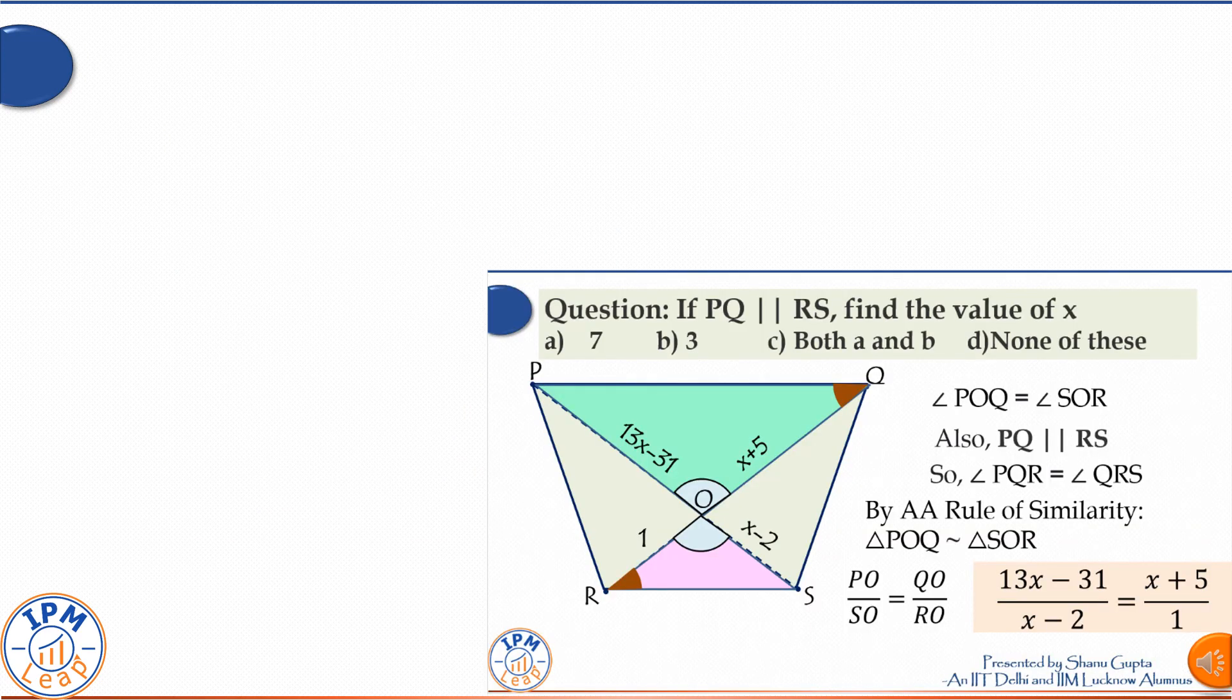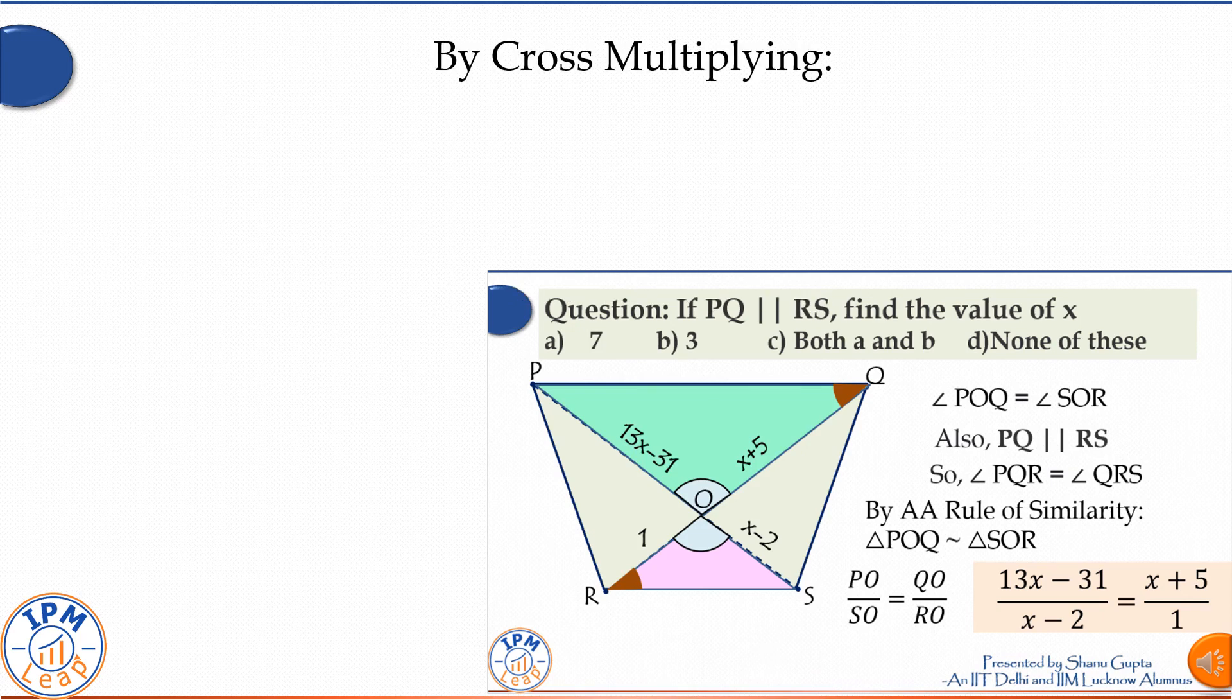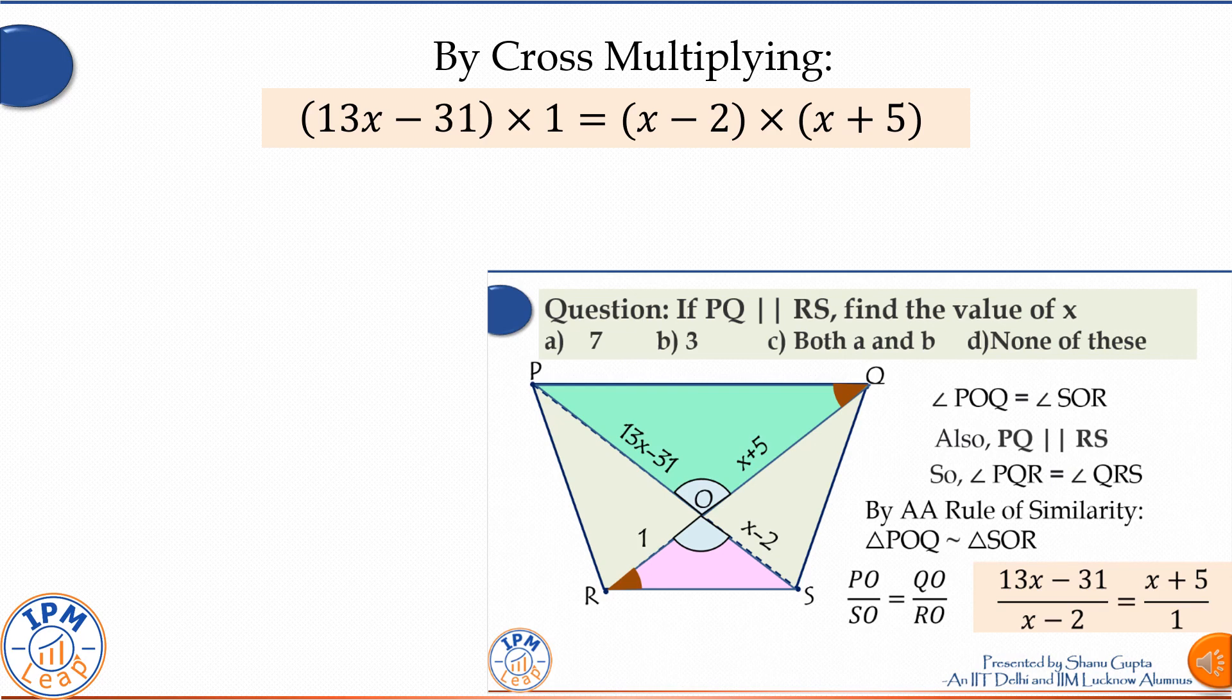Next we can simply cross multiply both sides of this equation and we will get (13x - 31) times 1 is equal to (x - 2) times (x + 5). We can combine the two factors on the right hand side...